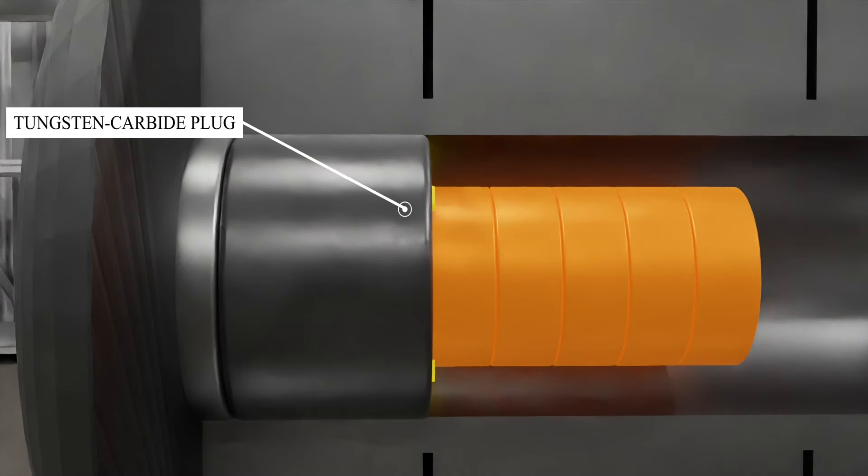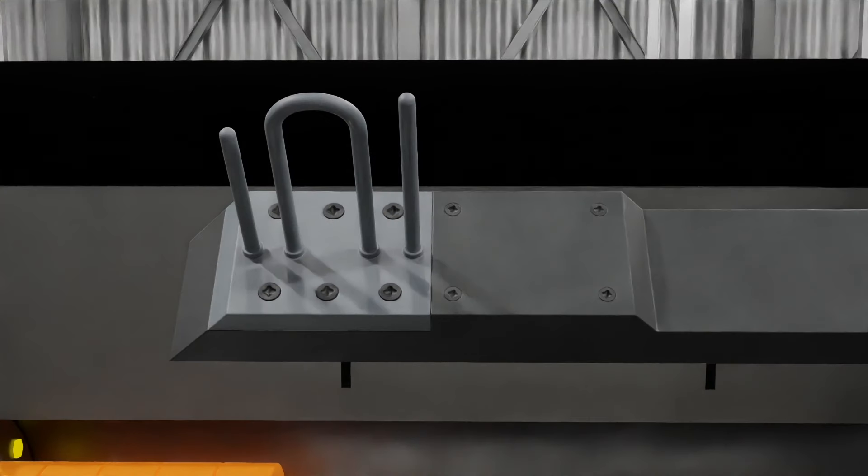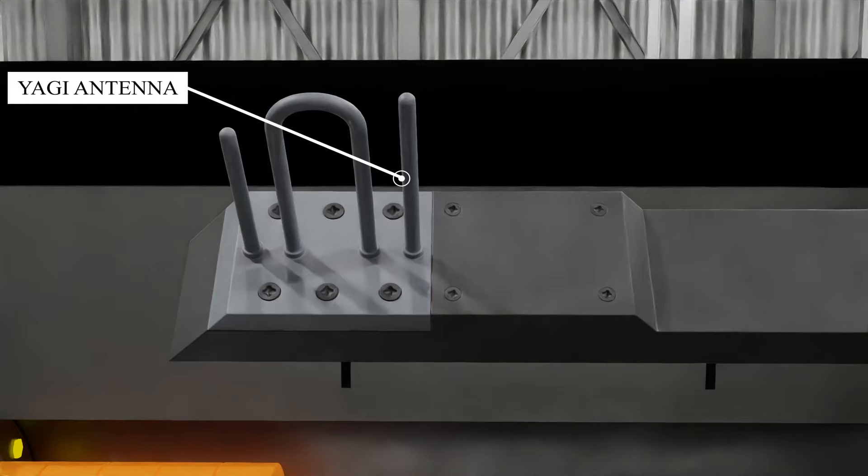Tungsten carbide thumper plug, for modulated neutron initiator placed on the tungsten carbide thumper plug. This initiator is added to make sure that the chain reaction starts. The final component is the altimeter with a Yagi antenna, an instrument used to measure the altitude of the bomb using radar.